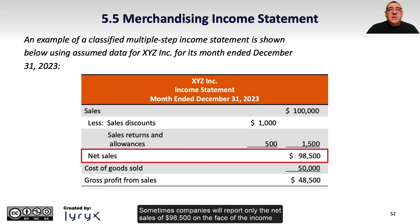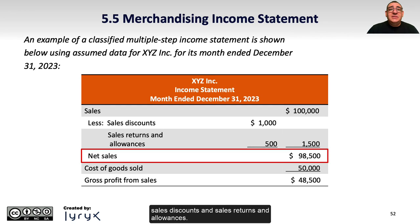Sometimes companies will report only the net sales of $98,500 on the face of the income statement and include a reference to a note to provide more detail on the sales discounts and sales returns and allowances.